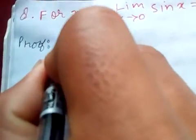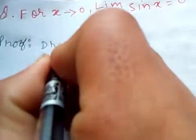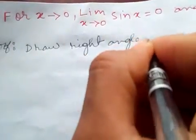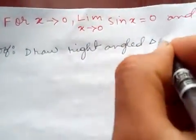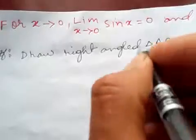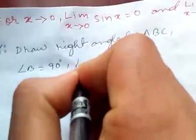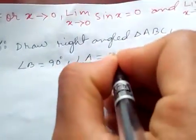Now, firstly, draw a right-angled triangle ABC, where angle B is equal to 90 degrees, and angle A is, let's say, x.